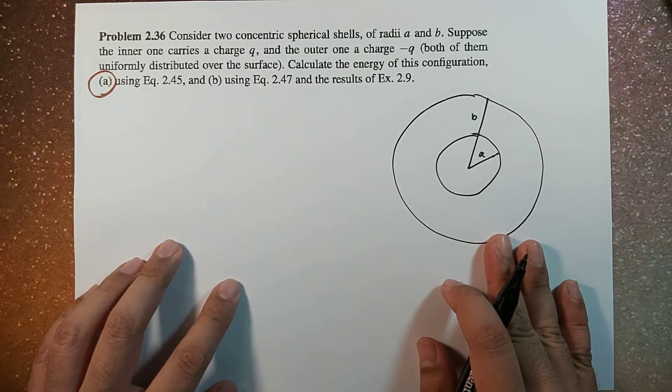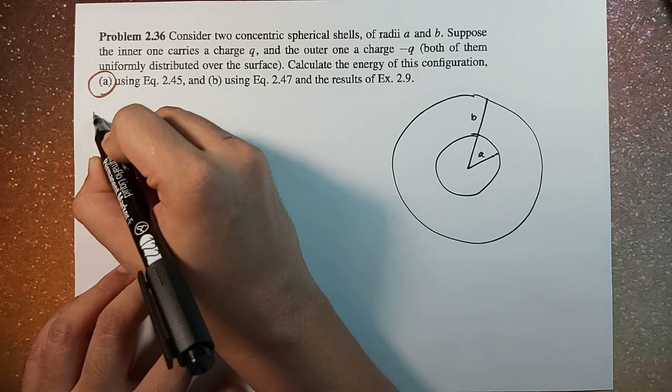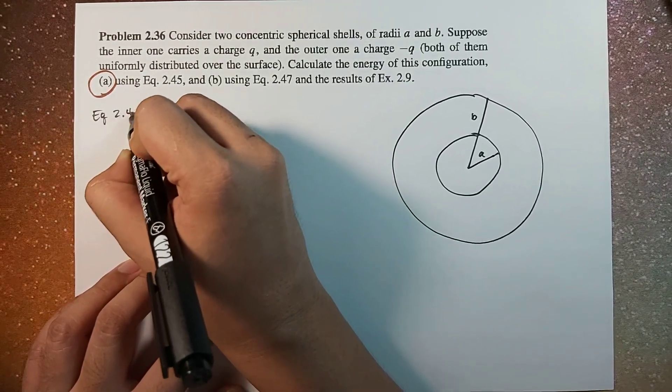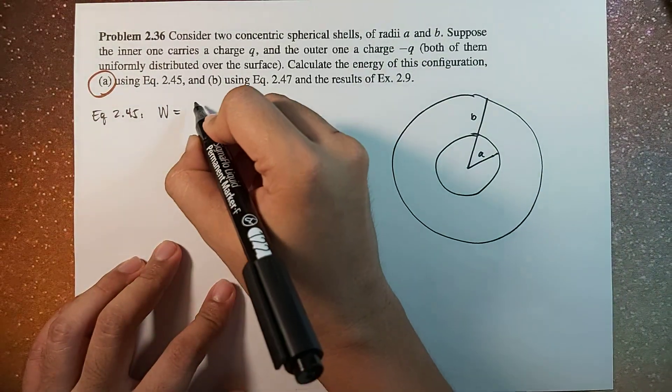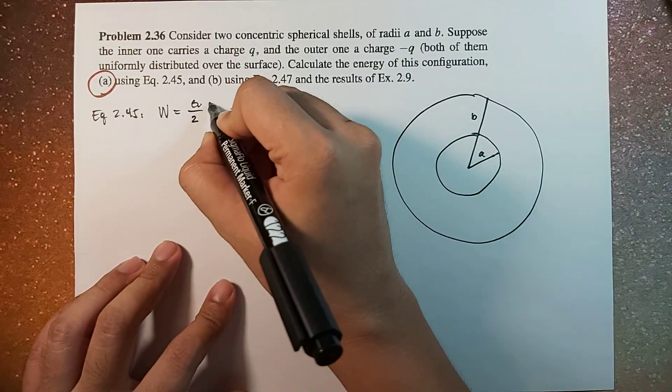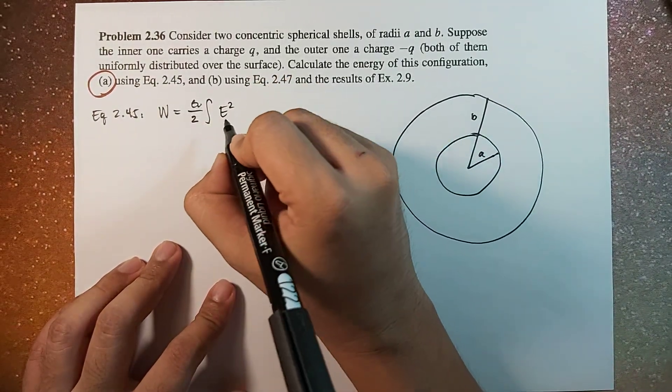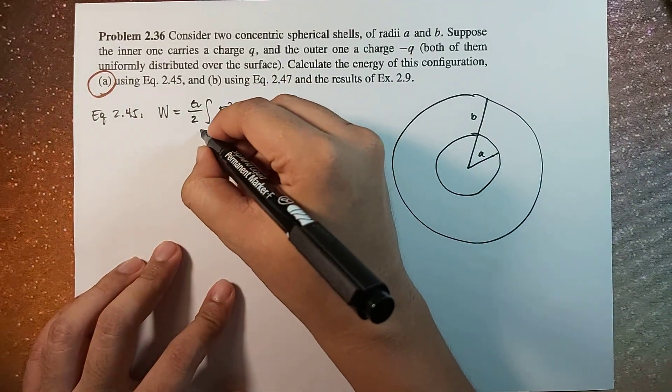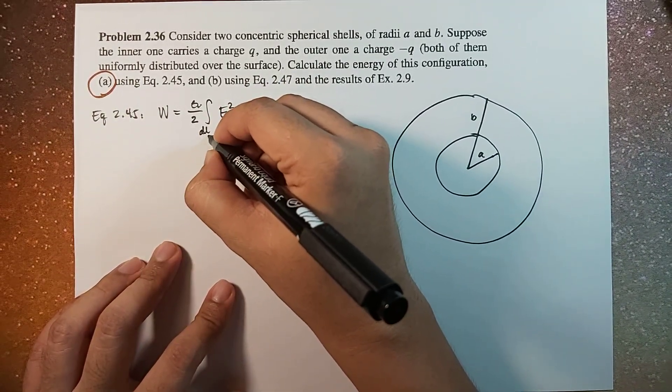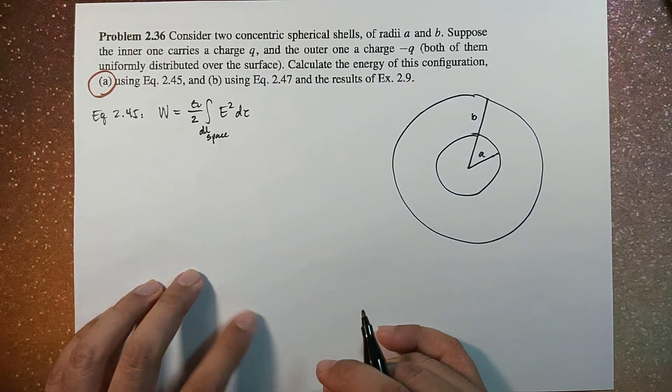Okay, so in this case, we're now going to have three regions from equation 2.45. And the stored energy is equal to epsilon naught over 2 times integral of square of the magnitude of the electric field, d tau, this is volume integral, and the integration will happen over all space.